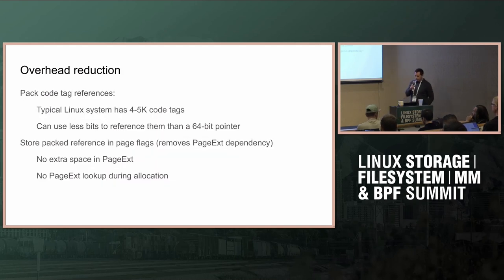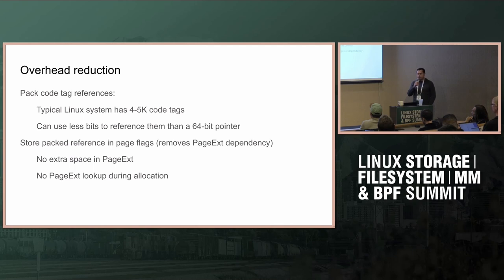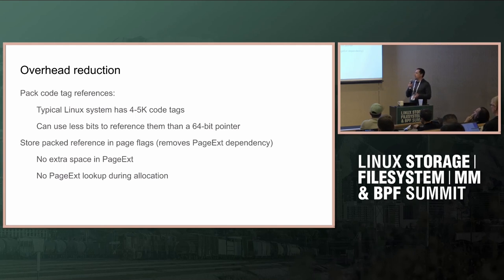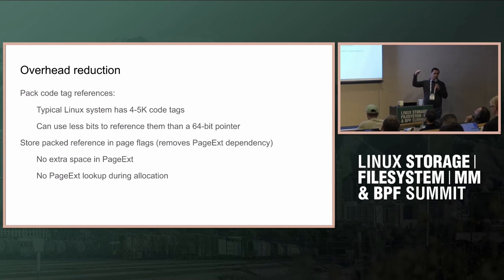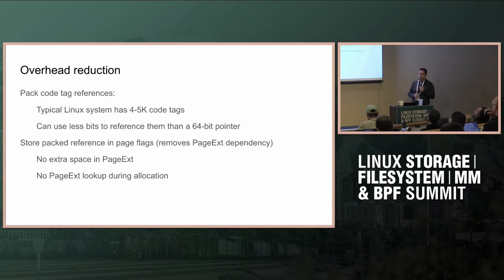The idea to reduce this is that a code tag reference is basically a pointer to a code tag or allocation tag. There are about 4,000 to 5,000 allocations in the whole kernel. We don't really need a 64-bit pointer to reference 4,000 or 5,000 entries. What we can do is basically have an index which can be used to reference them.